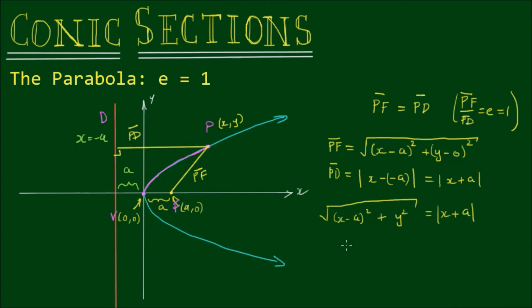And if we square both sides, we get (x - a)² + y² is equal to (x + a)². So I can get rid of the absolute value bars because anything that is squared becomes a positive. And an absolute value will always be a positive value.